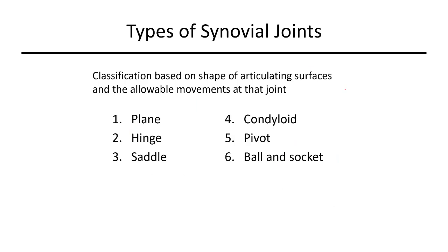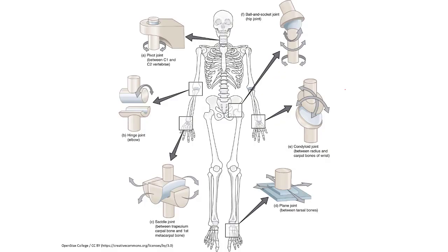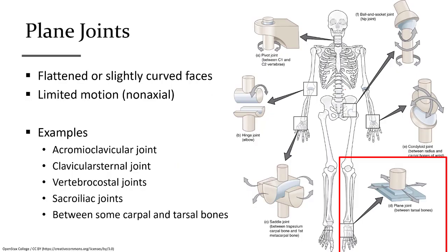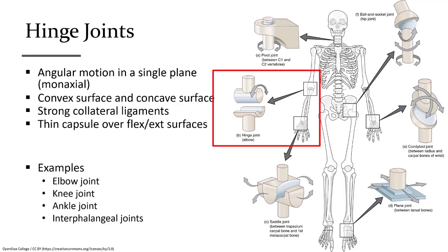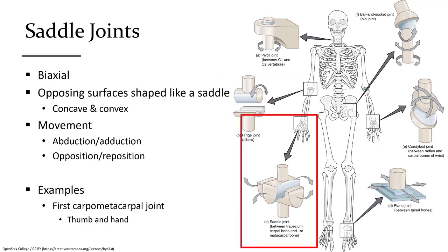Synovial joints have several subgroups based on their shape and movements. Plane joints glide across each other with limited movement; one example is between the sternum and the clavicle. Hinge joints, like a door hinge, have one bone rotating around the other in a uniaxial plane — the best example is the elbow. Saddle joints have two interlocking surfaces, one concave and one convex; the base of the thumb is a prime example.